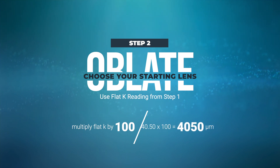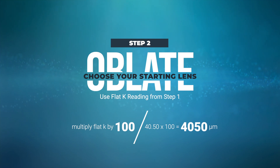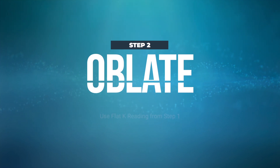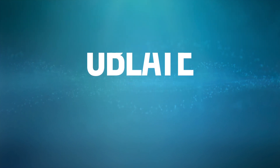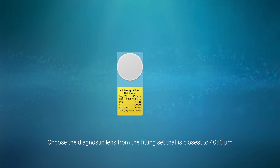For example, if the flat K reading is 40.50, multiply by 100 to get 4050 microns. Choose the diagnostic lens from the fitting set that is closest to 4050 microns.